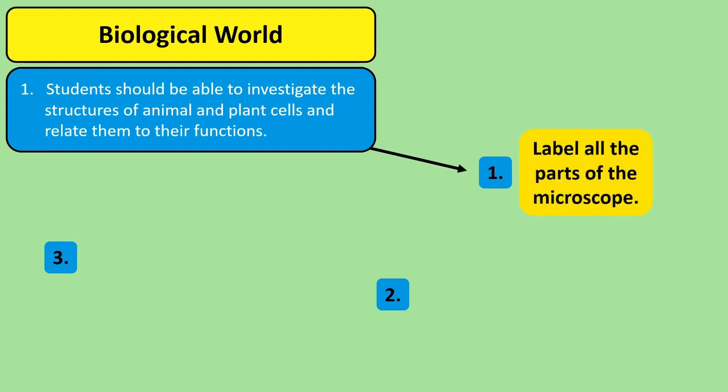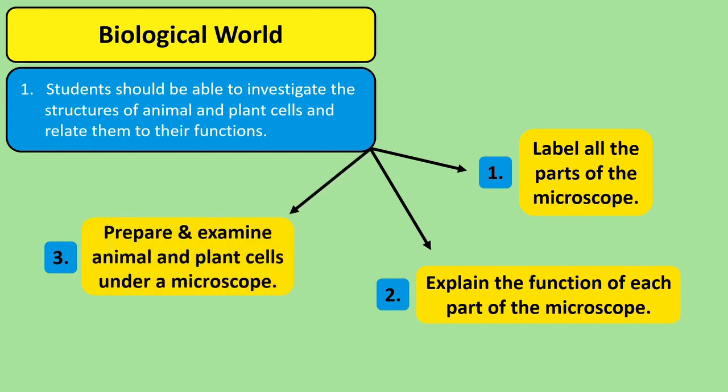Firstly, you need to be able to recognize a diagram of the microscope and label all of its parts. You need to be able to explain the function of all of these parts. And finally, you need to be able to gather and examine both animal and plant cells under the microscope.